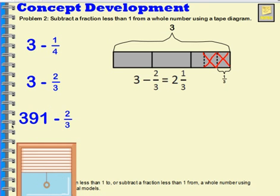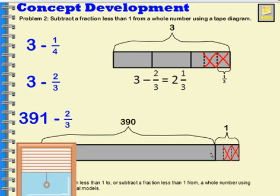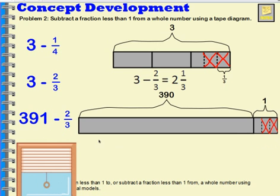But what if the number were a really big number instead of 3? What if it were 391 minus 2 thirds? Well, really it's not all that different than what we did here. We take our 391 and we can think of it as being 390 plus 1, because that's the same as 391. And then we take that last portion, we separate it into 3 parts, we subtract 2 of them. It would leave us with 390 and 1 third. So 391 minus 2 thirds would equal 390 and 1 third.